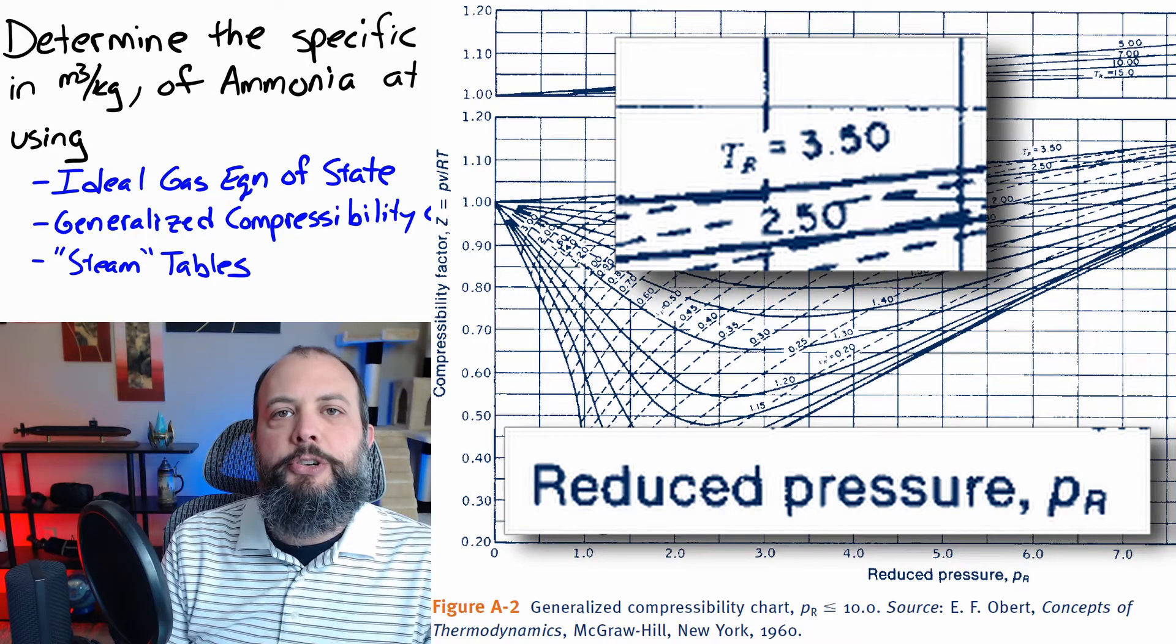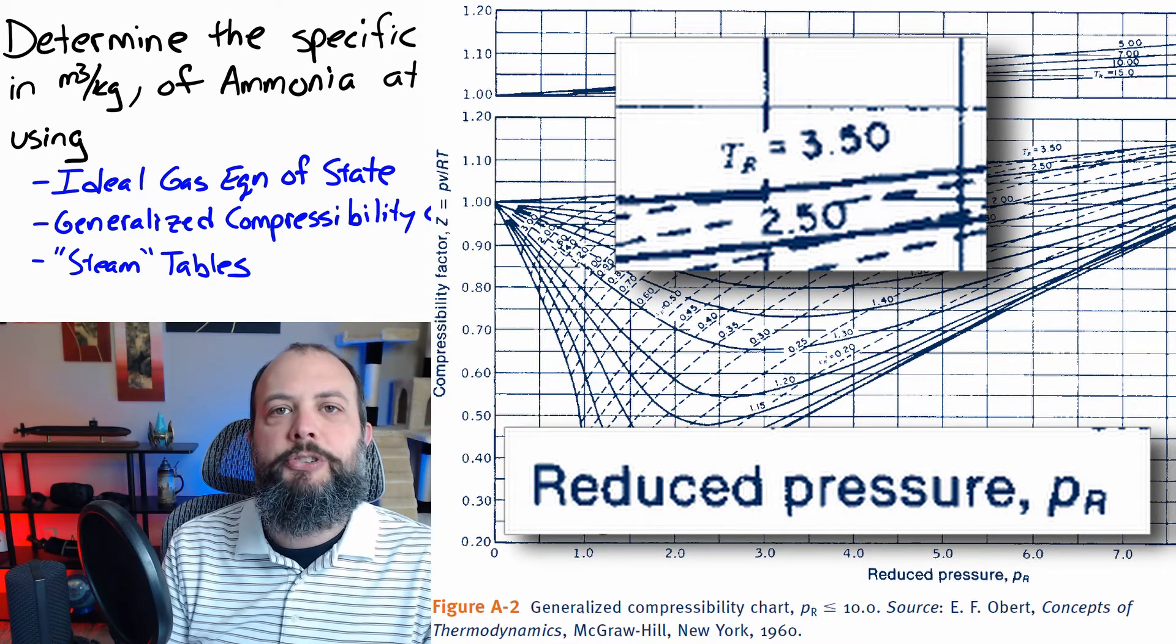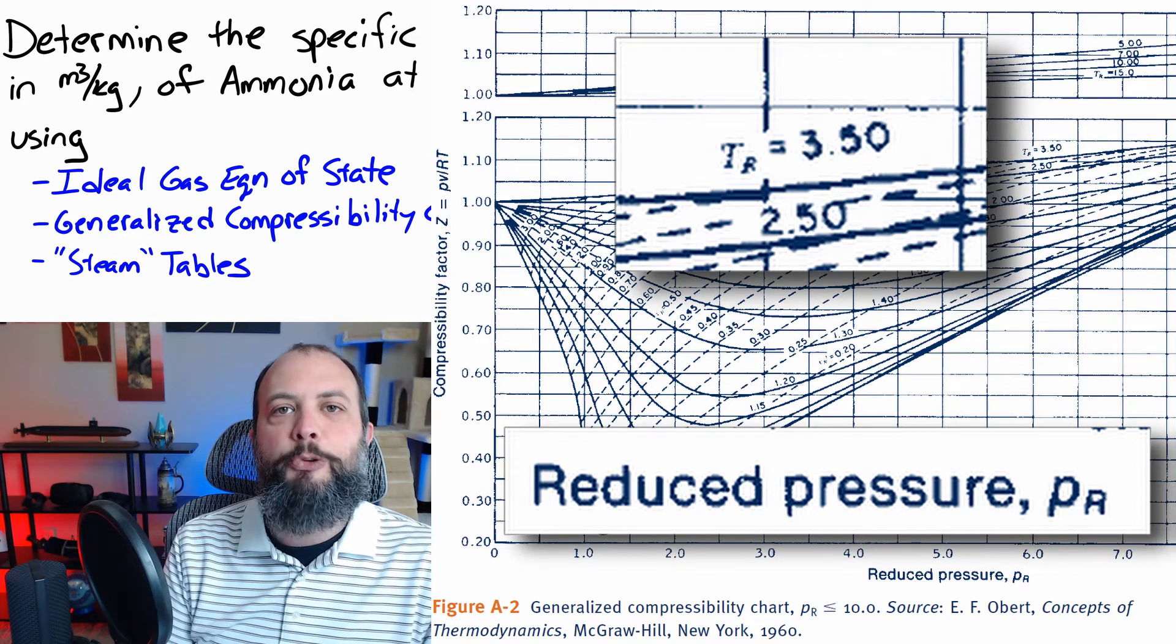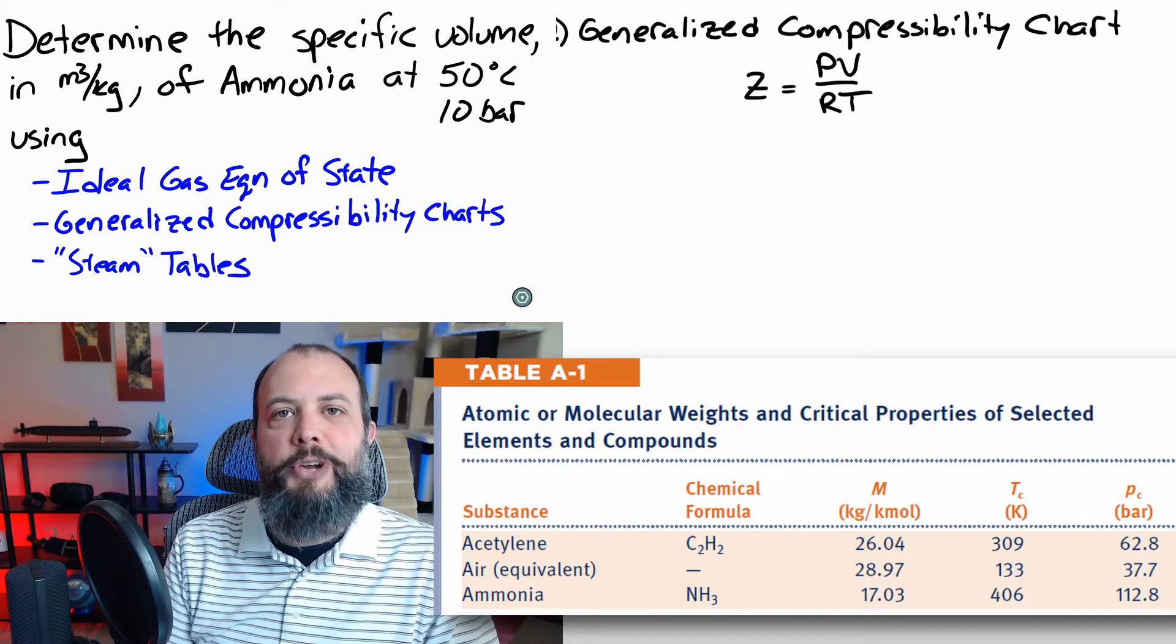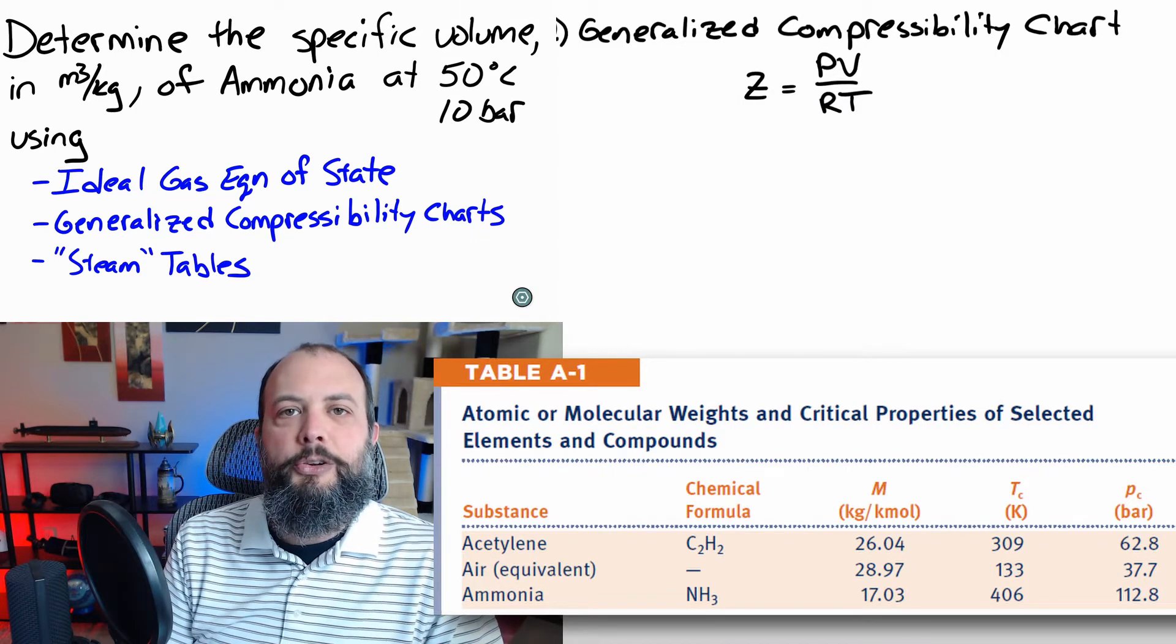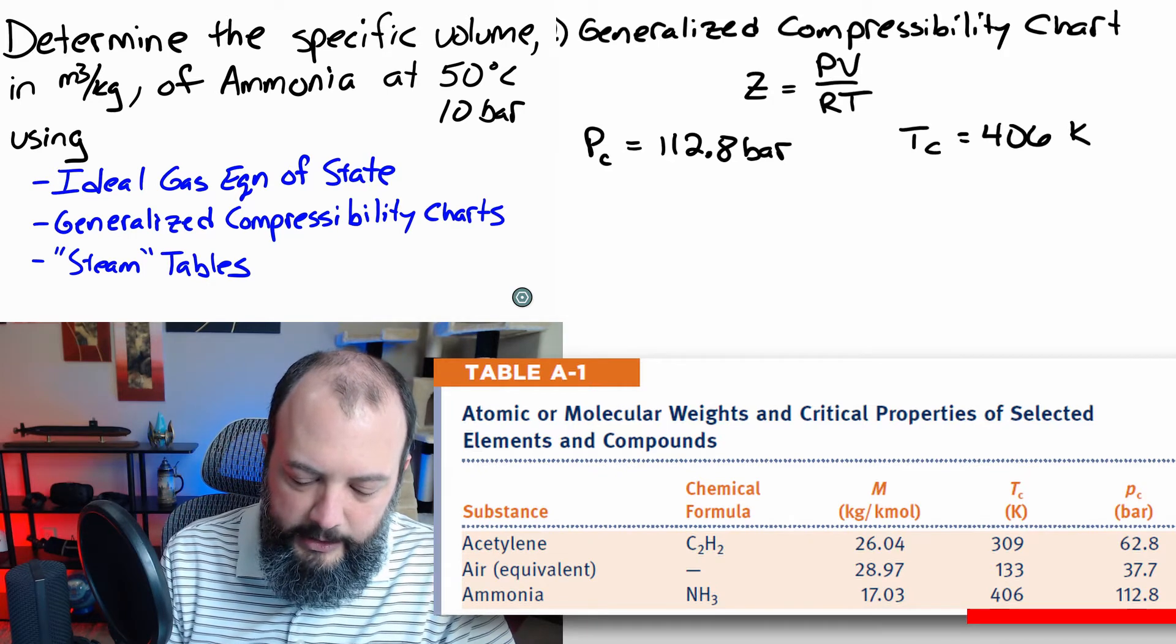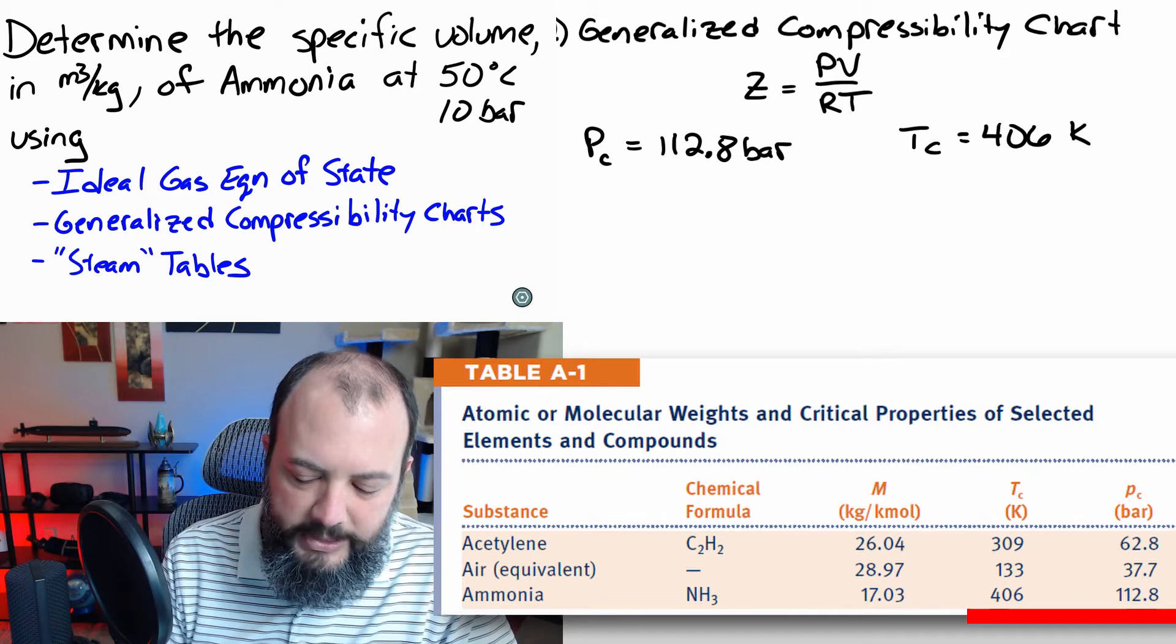Pulling the compressibility chart on the screen, you can see that we can't look up values with just the temperature and pressure that we're given. We actually need to reduce those to a reduced temperature and a reduced pressure. In order to do that, we're going to need the critical temperature and critical pressure that you're going to look up in a table in your textbook. And for ammonia, we can see that the critical pressure is 112.8 bar and critical temperature 406 Kelvin.